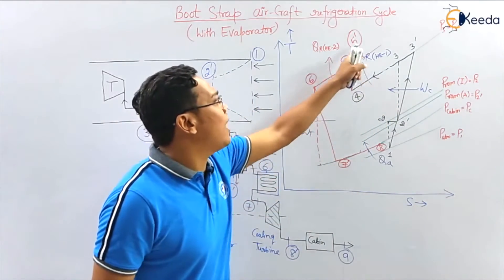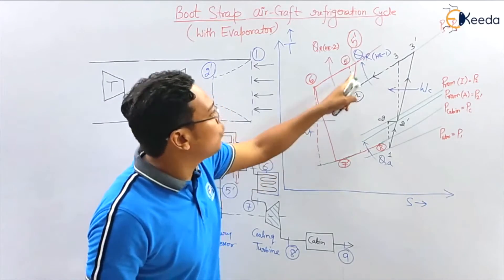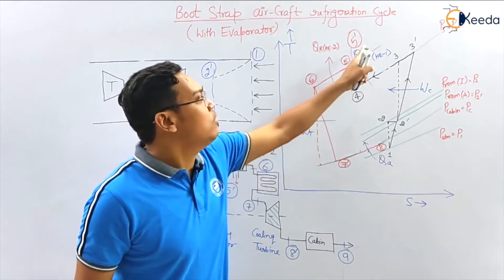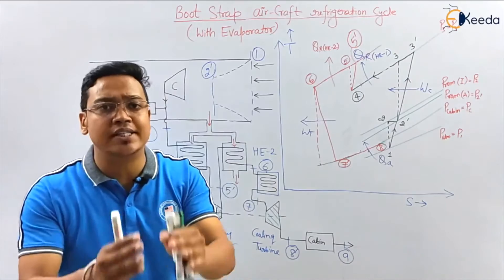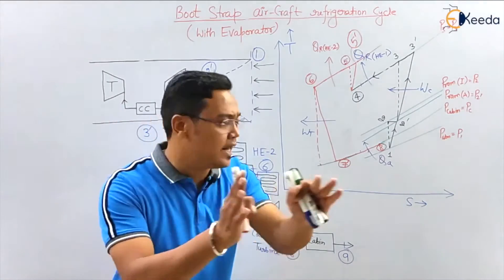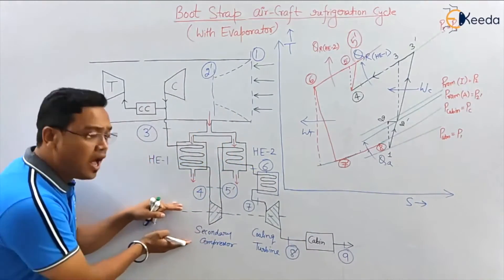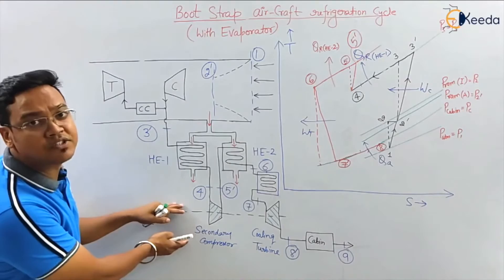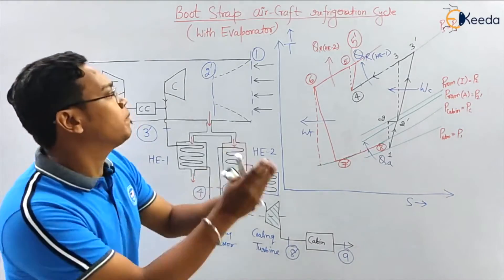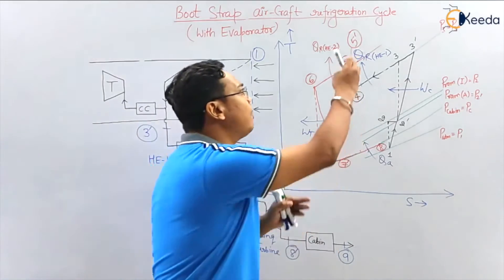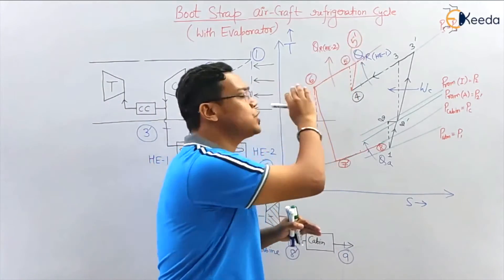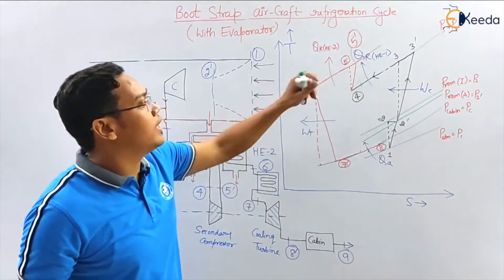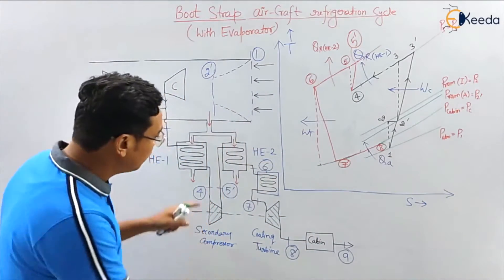From 4 to 5-dash, this process is happening in the secondary compressor, as I declared in my last video. Now after 5-dash to 6, the process is going on in heat exchanger 2.